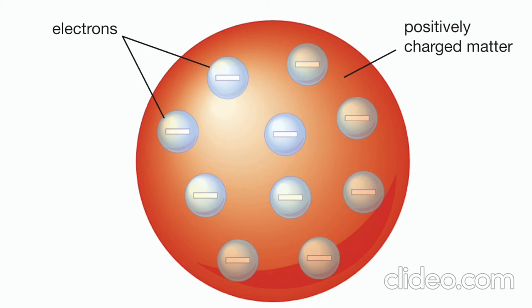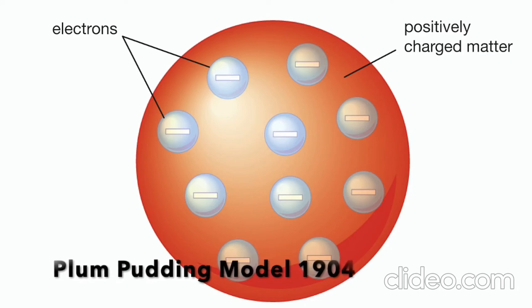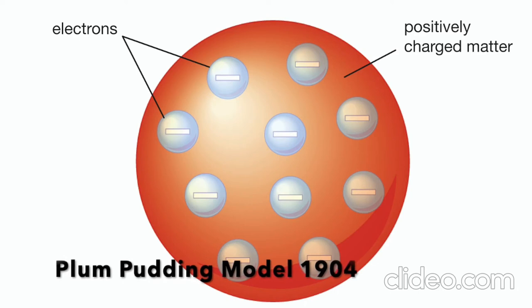Thompson's model showed an atom that had a positively charged medium or space with negatively charged electrons inside the medium. Soon after its proposal, the model was called a plum pudding model because the positive medium was like a pudding with electrons or plums inside.